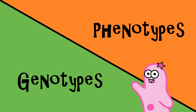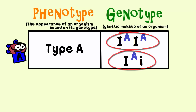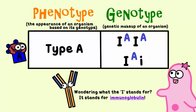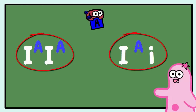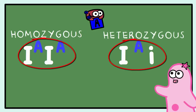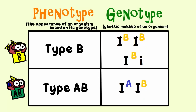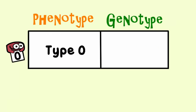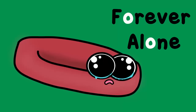Let's talk about phenotypes and genotypes. The phenotype of type A blood is A, but the genotype can be written two ways - either homozygous or heterozygous. Without testing, we don't really know which one it is. The phenotype of type B blood is B, but the genotype is also written two ways. The phenotype of type AB blood is AB, and the genotype is written just one way. The phenotype for type O blood is O, and the genotype is written as lowercase i, lowercase i - no A or B antigens, just like a zero.